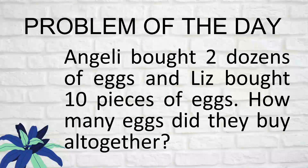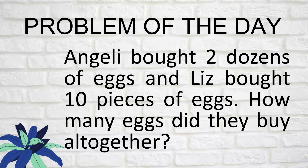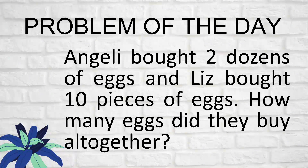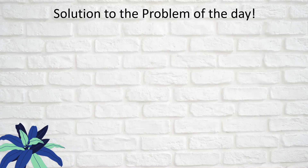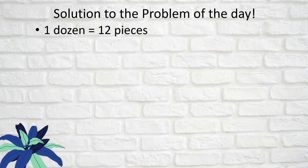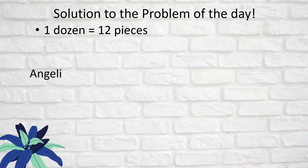Now let's have our problem of the day. Angeli bought two dozens of eggs and Liz bought 10 pieces of eggs. How many eggs did they buy all together? To solve this, you should know the meaning of a dozen. A dozen is equal to 12 pieces, so Angeli bought two dozens.